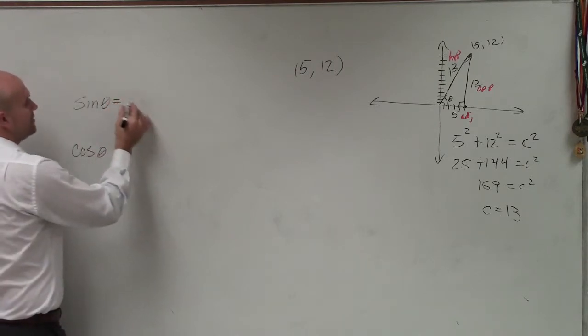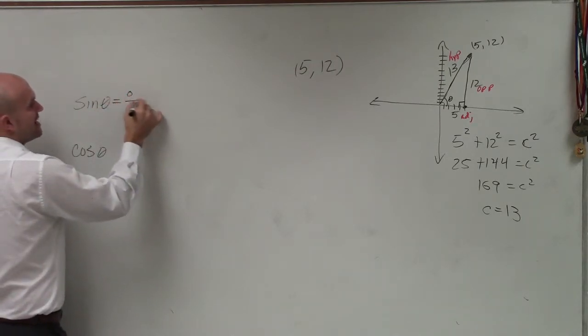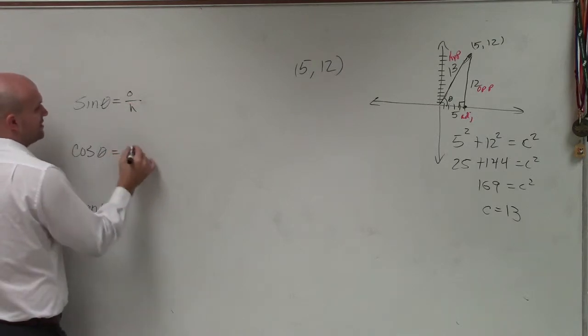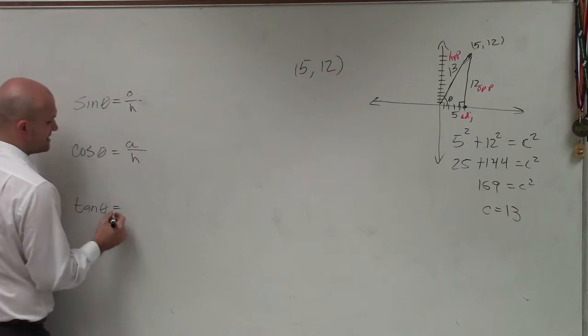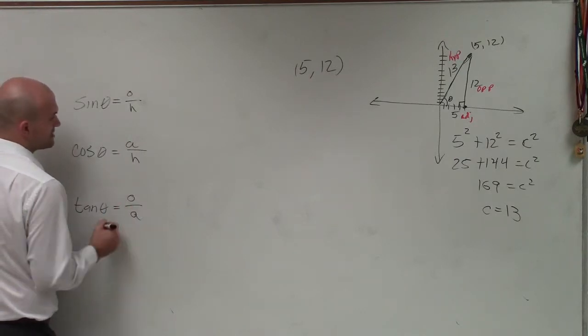Now remember, the sine of theta tells us to take the ratio of the opposite side over the hypotenuse. The cosine is the ratio of the adjacent side over the hypotenuse. And the tangent is the ratio of the opposite over the adjacent side.